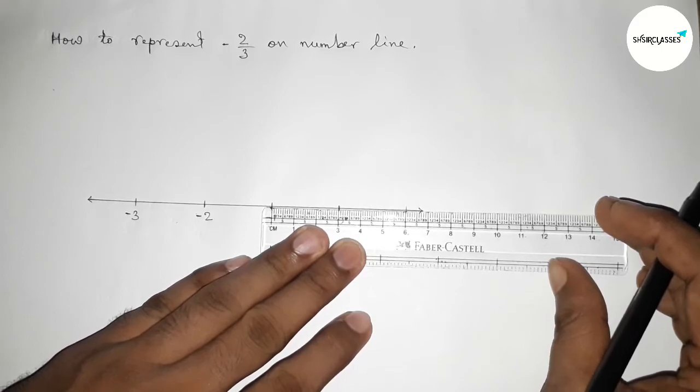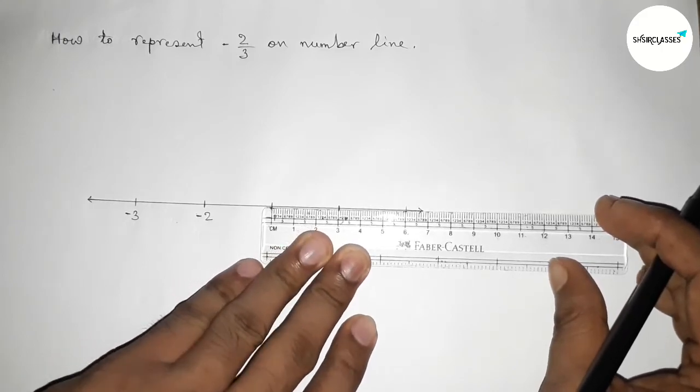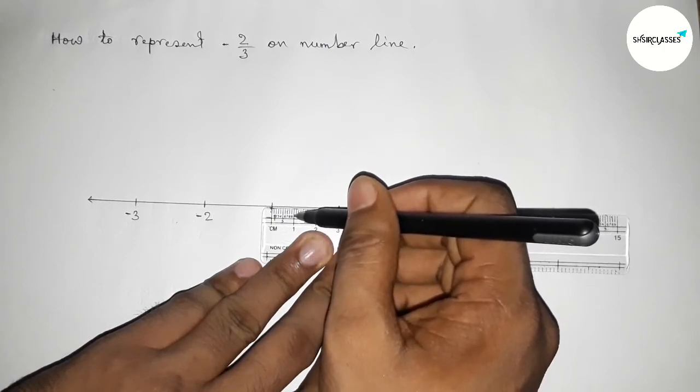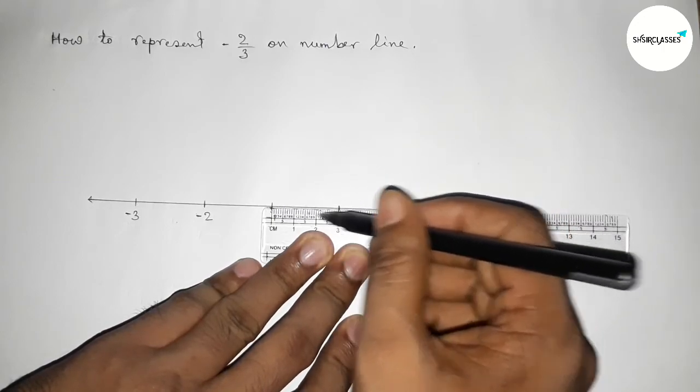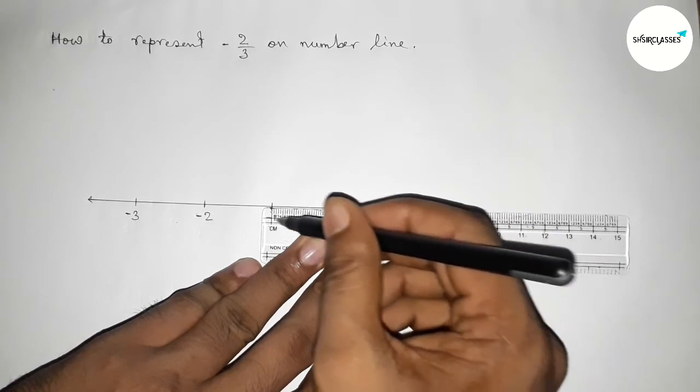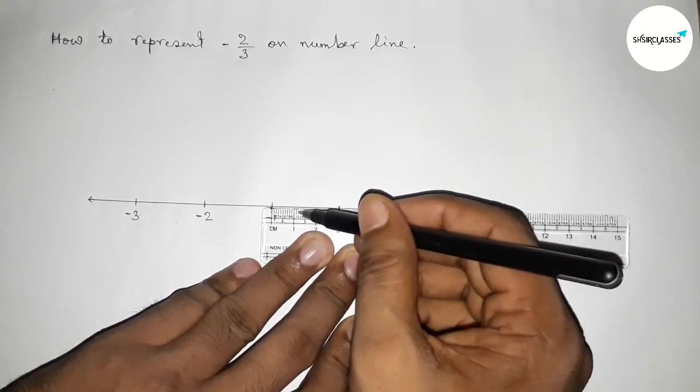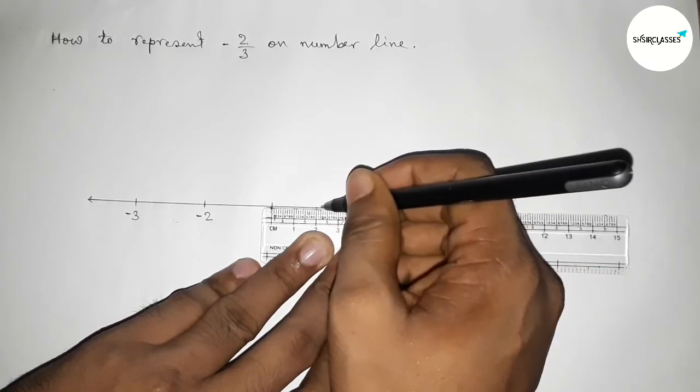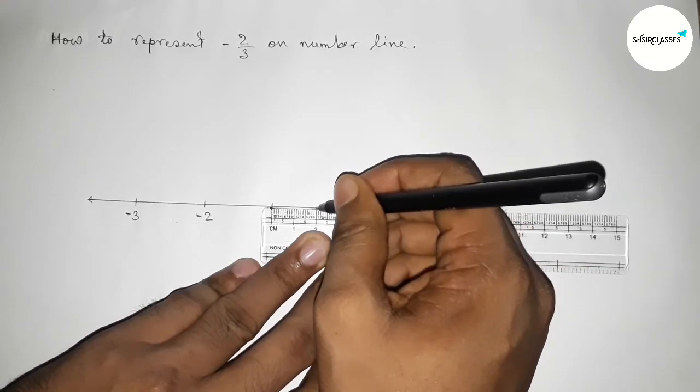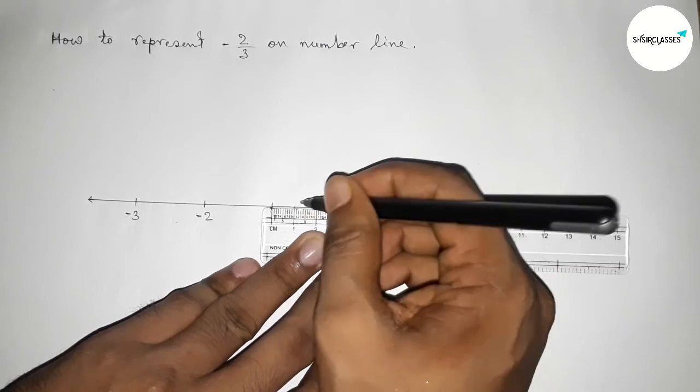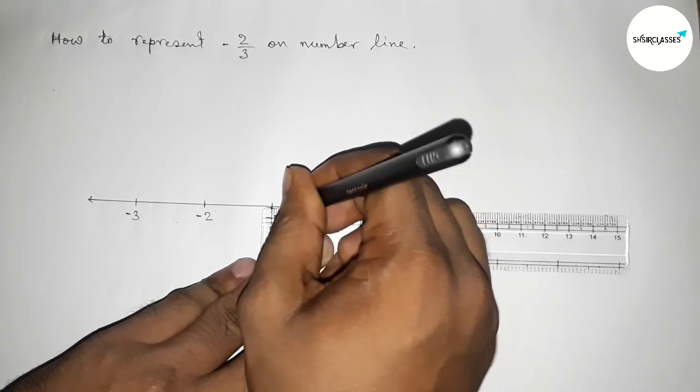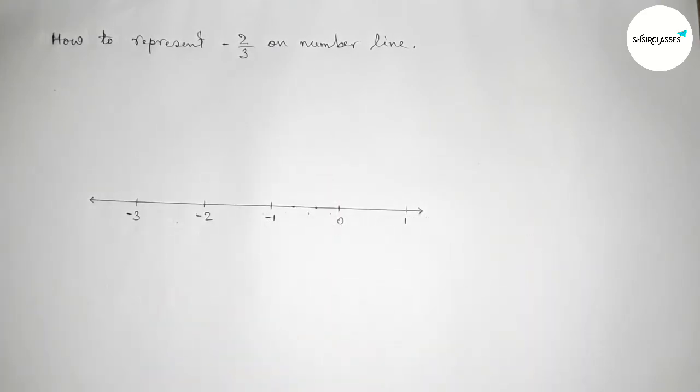The length between 0 to minus 1 equals to 3 centimeters. So this is 30 equal parts. If we divided 30 by 3, then the first part will be 10 and the second part will be 20. So this is the first 1 by 3.